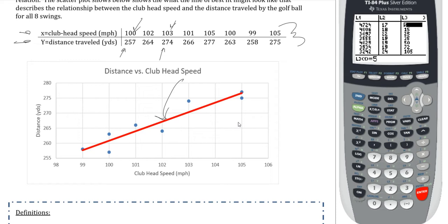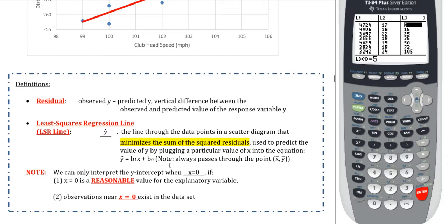Since it is a line, it's going to be in the form of y equals mx plus b, in terms of a slope and a y-intercept, or as we're more often going to see it here, y equals ax plus b. So that's what our goal is going to be here, and here are some definitions for that.